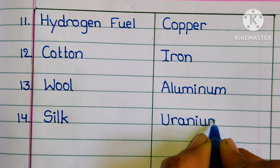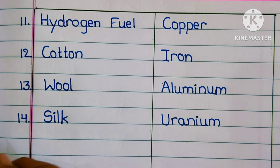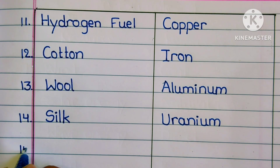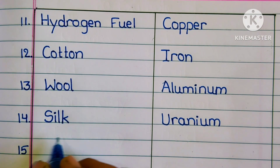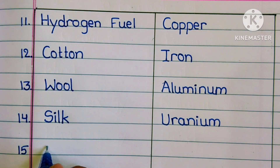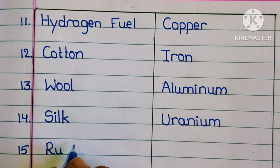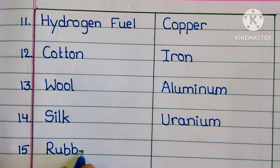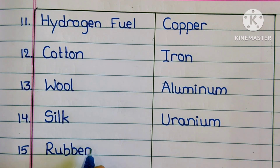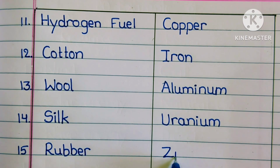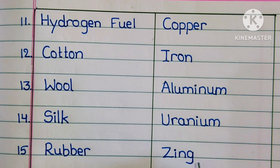Fourteenth one: silk is renewable and uranium is non-renewable. Fifteenth one: rubber is renewable and zinc is non-renewable.